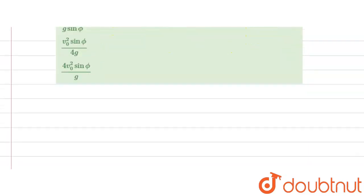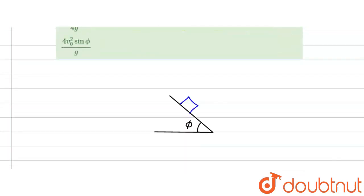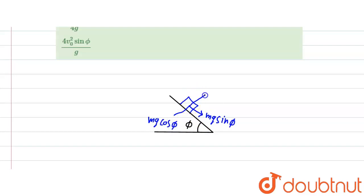Here phi is the angle of the incline when the block is slipping. This is the incline, the angle is phi, and the block has mass m. In the downward direction, one force is mg sinφ, and another force is mg cosφ. The normal force acts perpendicular to the incline, and friction acts along the incline.